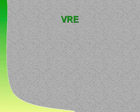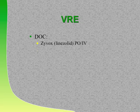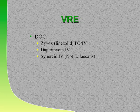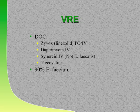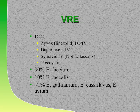Drug of choice for VRE in the blood: Zyvox is static—you don't want that in a blood model; you want a cidal drug. Use daptomycin. For VRE, your choices are Zyvox, daptomycin, Synercid (though Synercid does not cover faecalis), and tigacycline. Daptomycin is usually the one you'll pick. Most VRE is faecium; 10% is faecalis, and less than 1% are other VRE species.